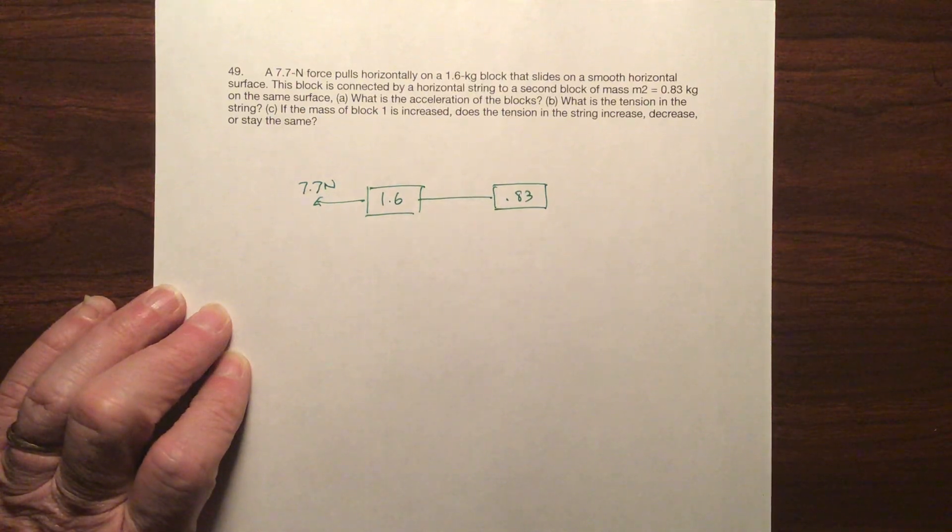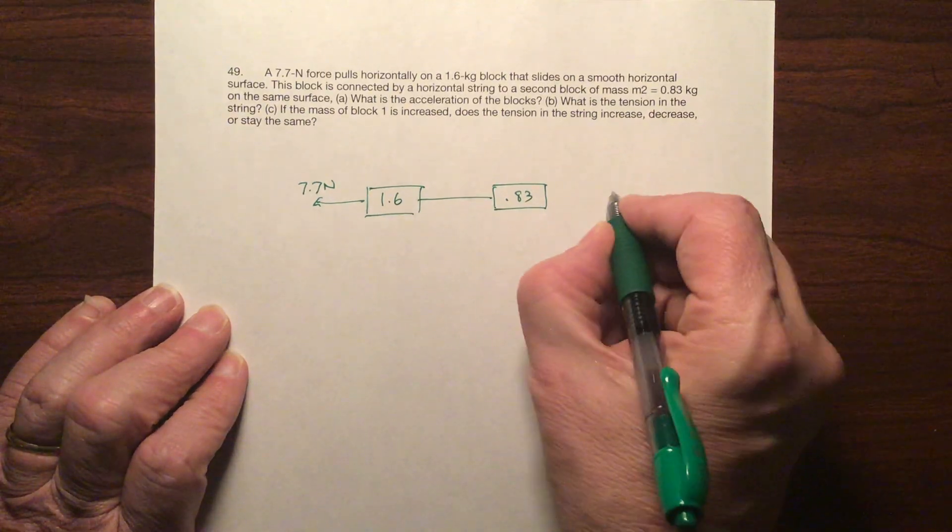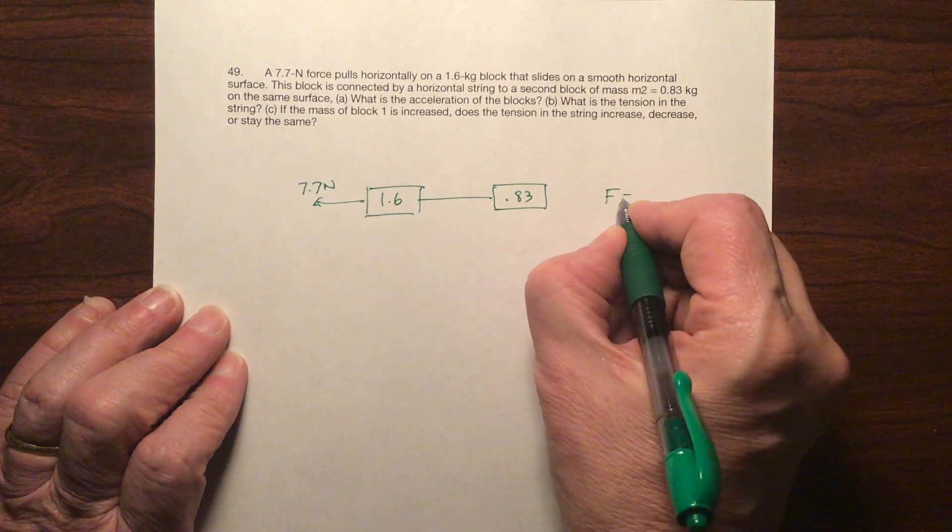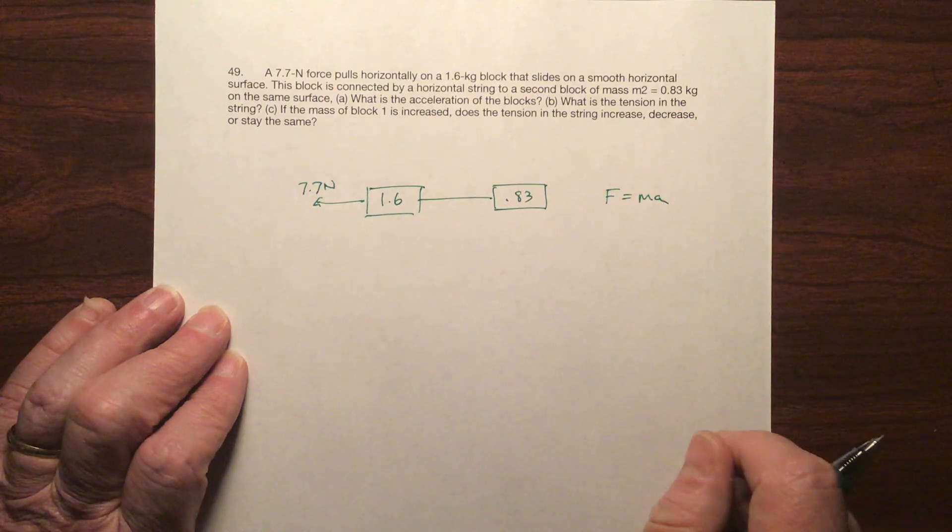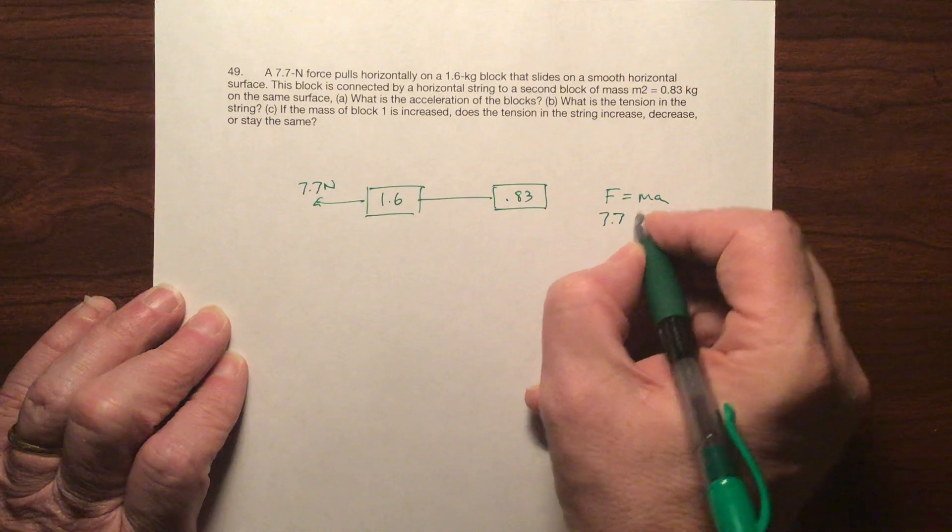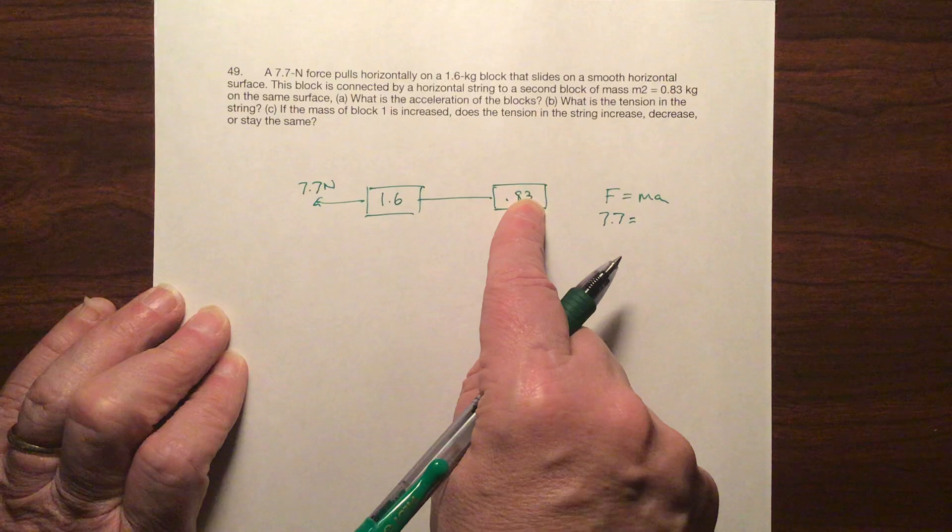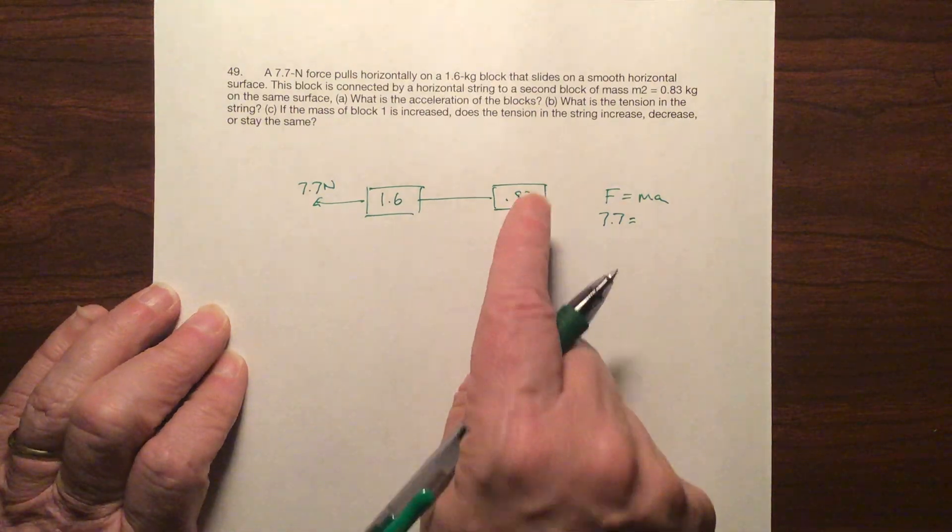Okay, first question says what's the acceleration of the blocks? Okay, well that I think we can do. F equals ma is the only thing I know to go back to. My force is 7.7. My mass has to be the whole mass. It'll have to be the whole mass.